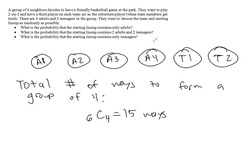Now, what is the probability that the starting lineup contains only adults? How many ways can you draw four adults if order doesn't matter? There are only four adults, meaning there's only one way you could grab four adults from this group of six.